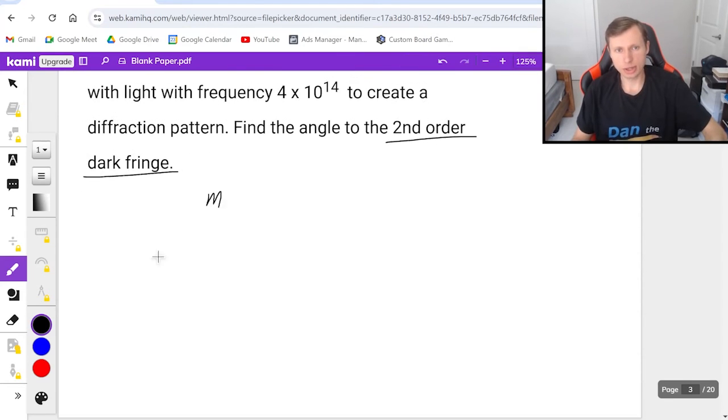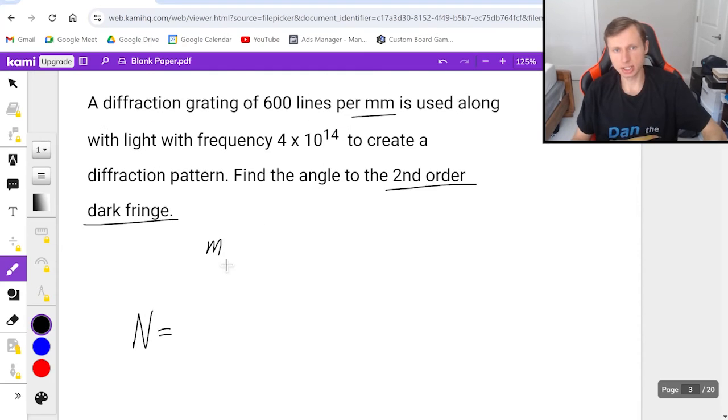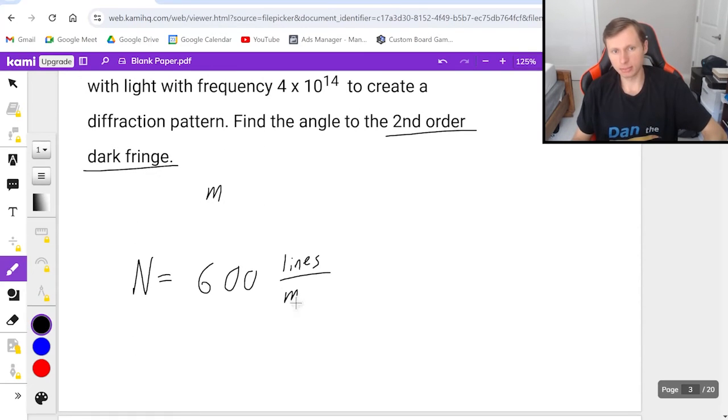Okay, so first with n, n is 600 lines per millimeter. If I want to convert that, all I have to do is multiply by the conversion factor with millimeters in the numerator and meters in the denominator, because this allows me to cancel out the millimeters.